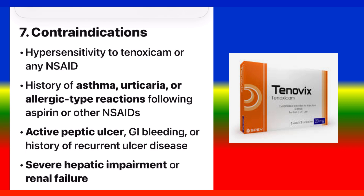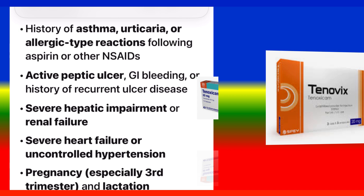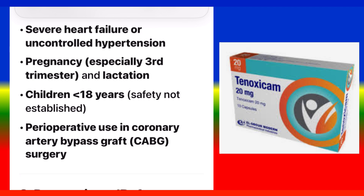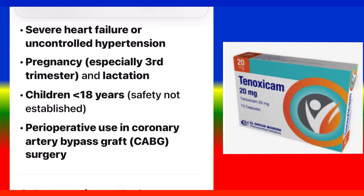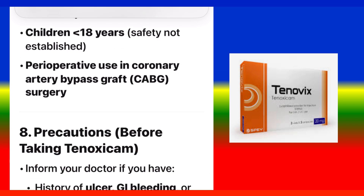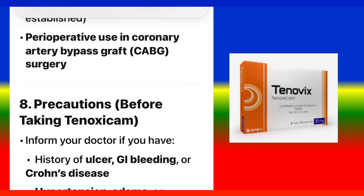Contraindications: hypersensitivity to tenoxicam or any NSAID; history of asthma, urticaria, or allergic-type reactions following aspirin or other NSAIDs; active peptic ulcer, GI bleeding, or history of recurrent ulcer disease; severe hepatic impairment or renal failure; severe heart failure or uncontrolled hypertension; pregnancy (especially third trimester) and lactation; children under 18 years — safety not established; perioperative use in coronary artery bypass graft (CABG) surgery.